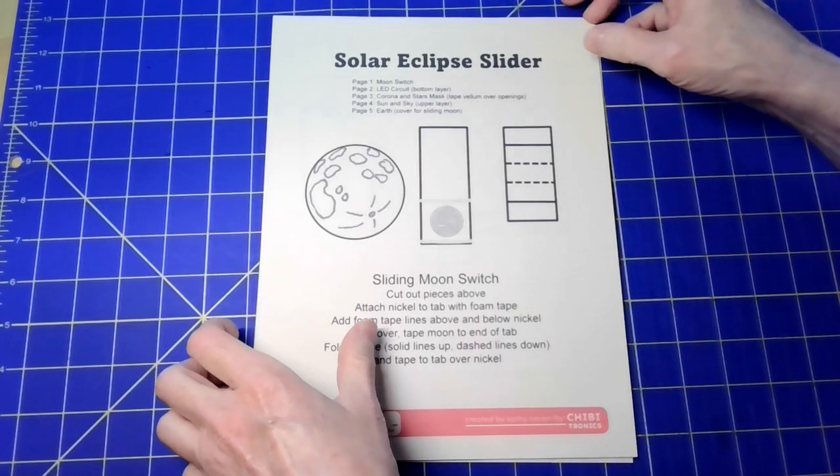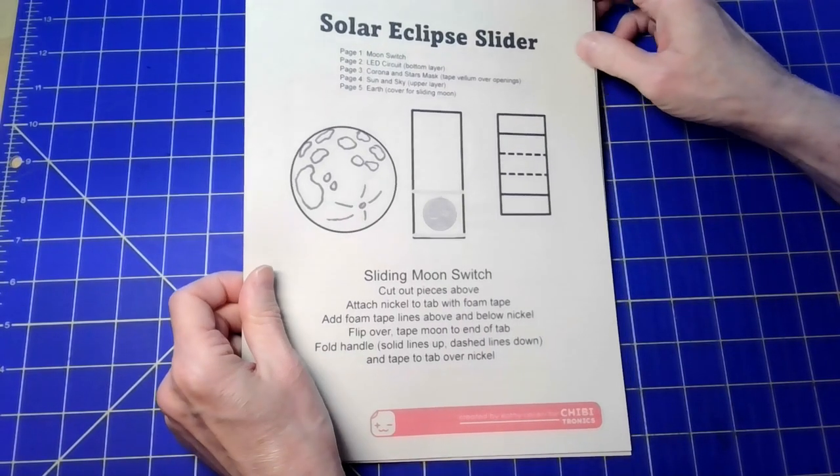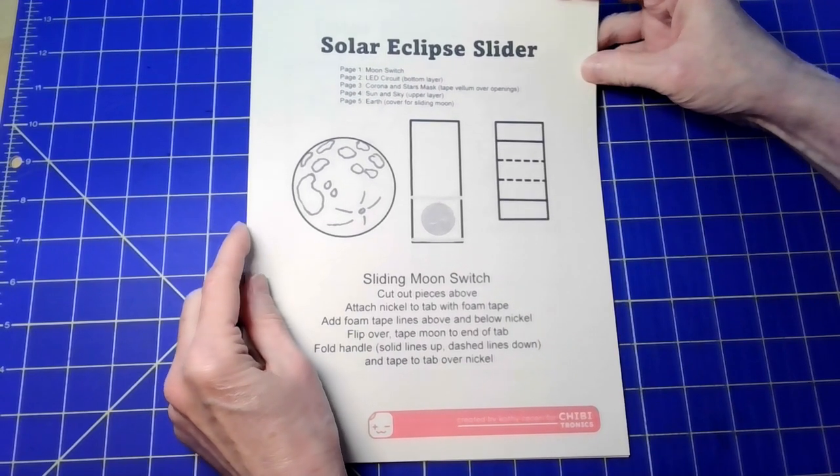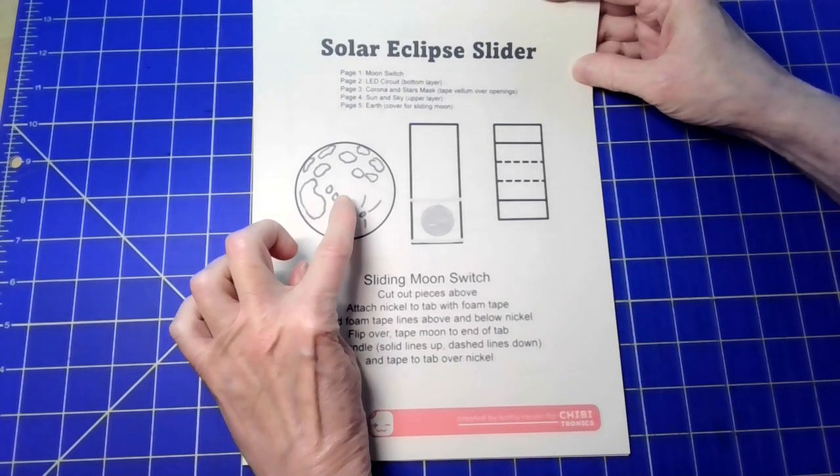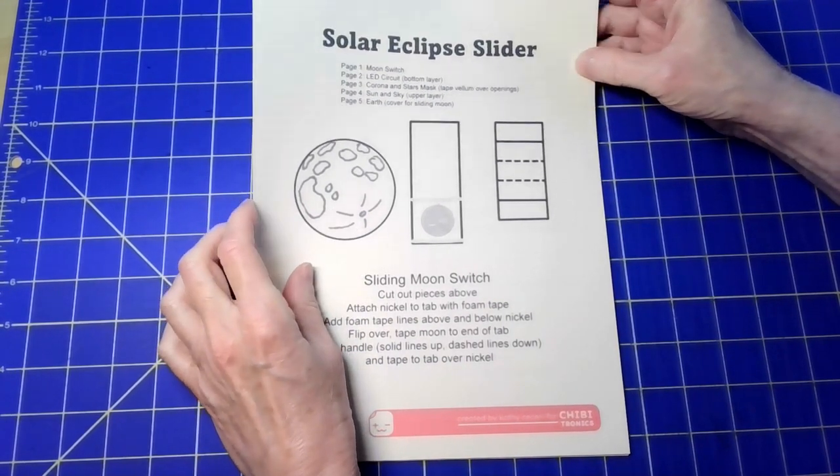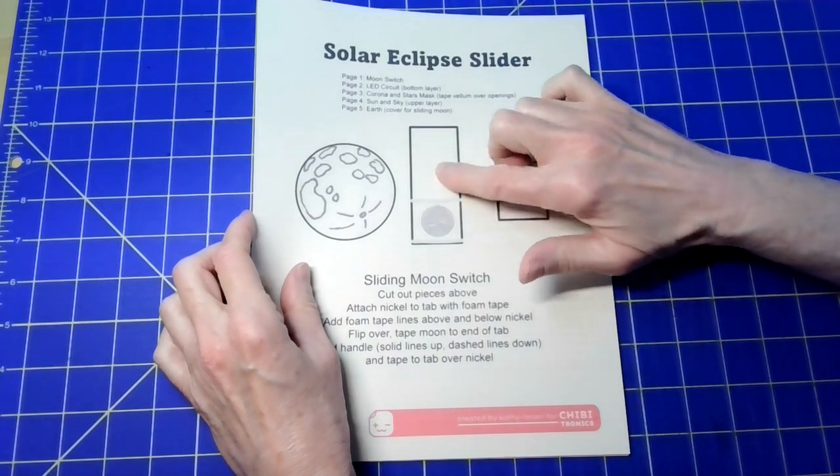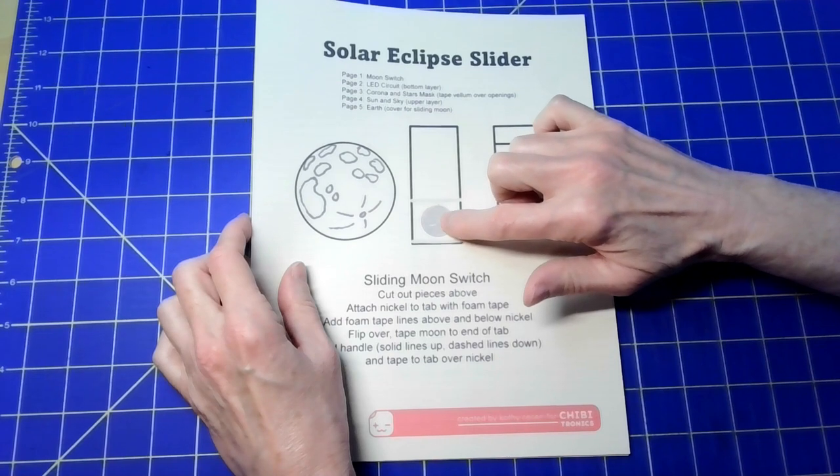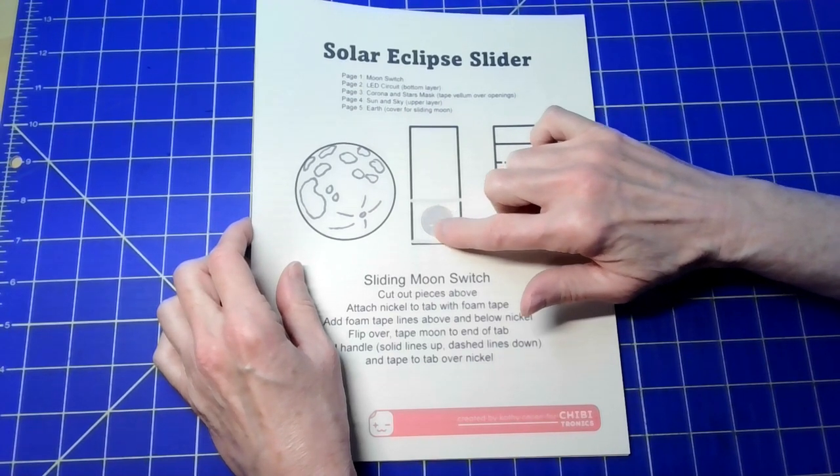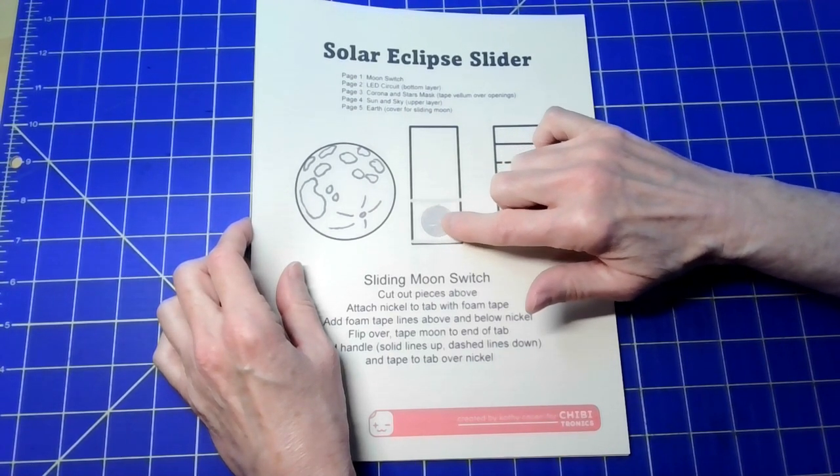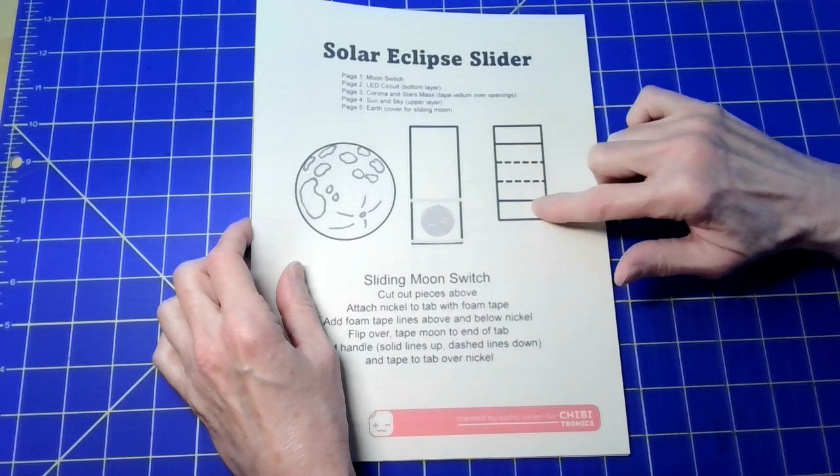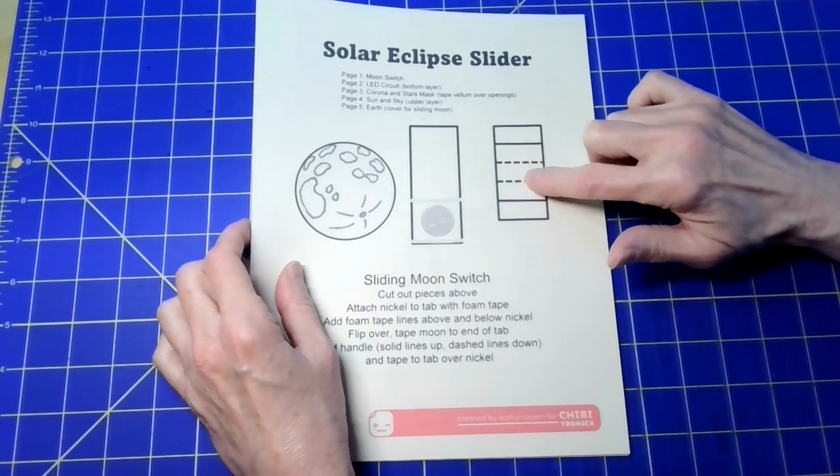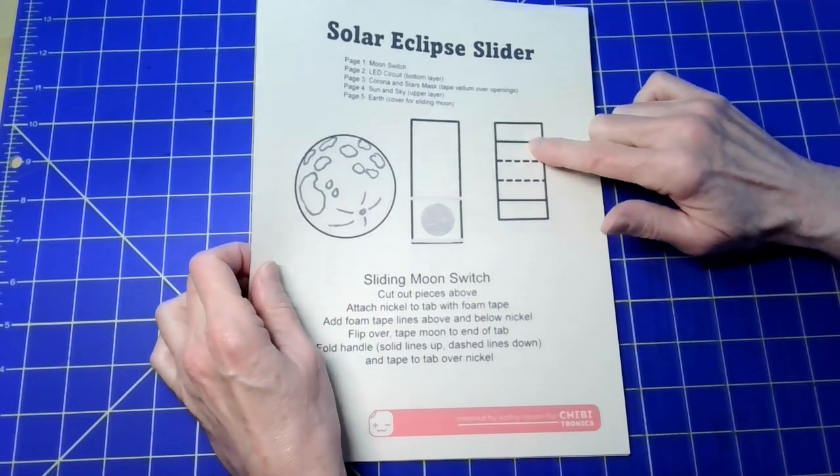Let's take a quick look at the templates. The first one is the pull tab slider. This is the moon that is going to cause our eclipse. It gets taped onto the end of this pull tab on the back of which has this nickel that's going to be the conductive part that closes our circuit, and this part is going to fold up along these lines to create a little handle to help you pull that tab.